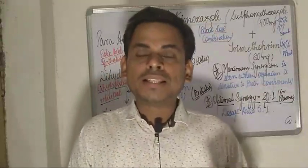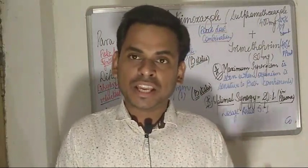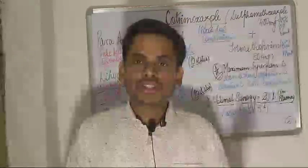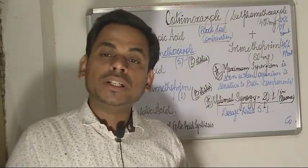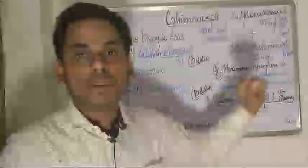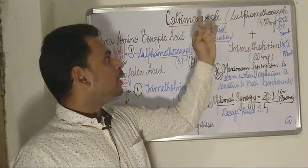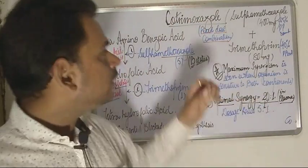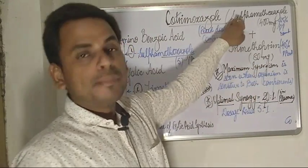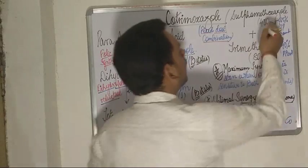Today's topic of discussion will emphasize the very important antibacterial agent cotrimoxazole. This has been a very favorite question in most professional exams, where students are asked about the rationale of using sulfamethoxazole and trimethoprim as a combination. Cotrimoxazole is a fixed dose combination of sulfamethoxazole and trimethoprim in the ratio of 400 milligram to 80 milligram.